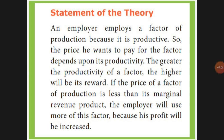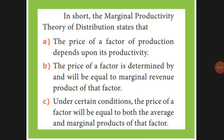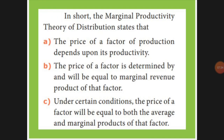Suppose your expenses are more and your profit is less — profit is diminishing and decreasing. Then you must adjust expenses with your price to equalize the profit. In short, the price should depend upon productivity — how much you are producing. The price should be equal to the marginal revenue of a product, and the price will be equal to both the average and the marginal revenue.